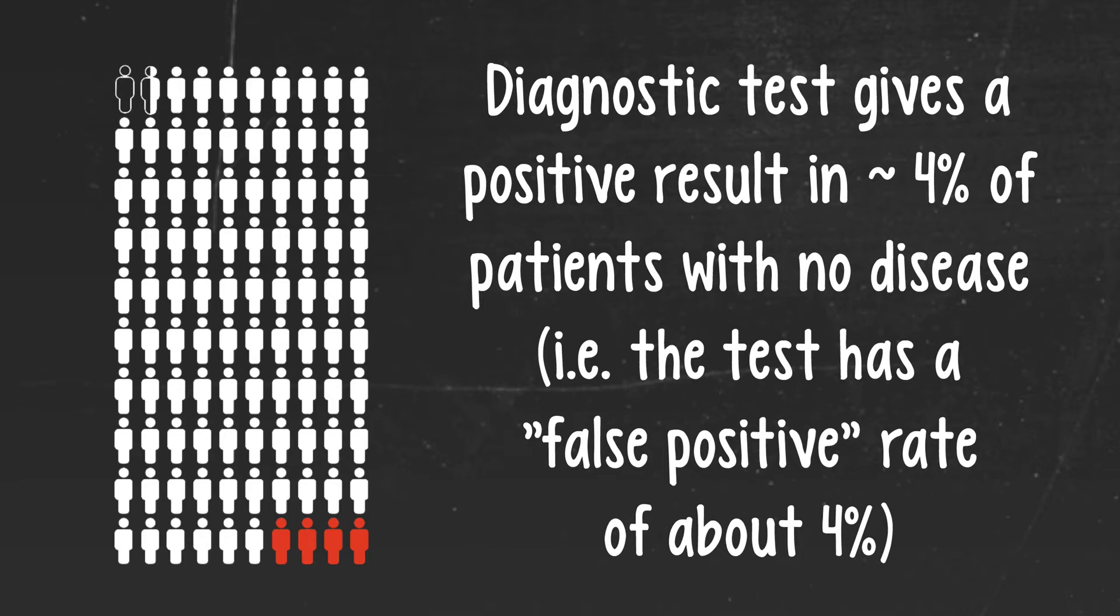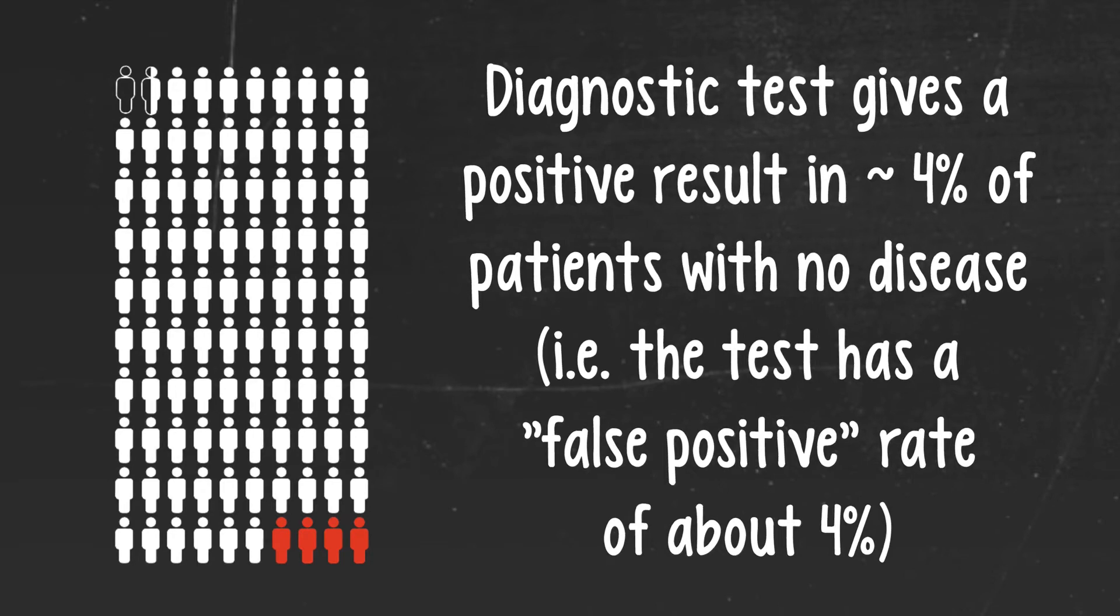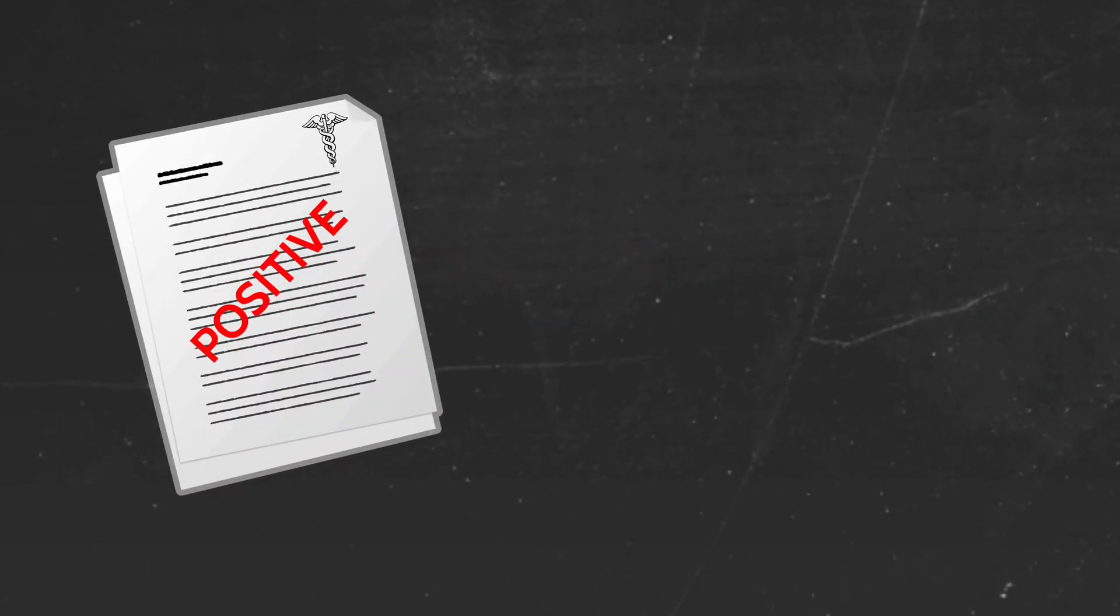So just think about that. That's about 96% accuracy in people who don't have the disease. And this is even better than the 80% accuracy that the test shows in people with the disease. So on the surface it would seem that the performance of this diagnostic test is quite impressive. So by now you're probably thinking, enough with all these facts and numbers, just answer the big question. What does the positive test result really mean for the patient?